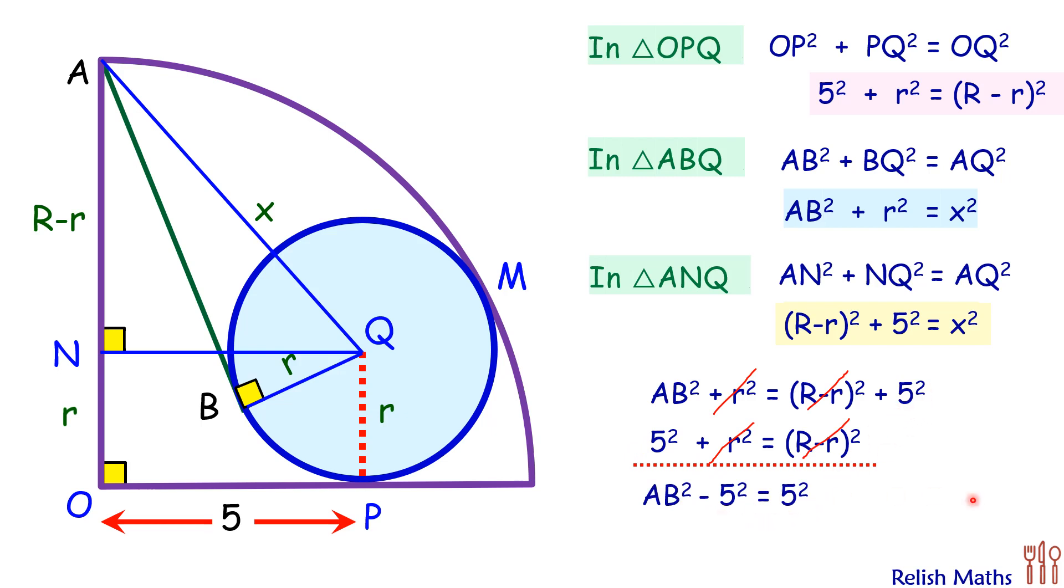Solving it, we will get AB as 5√2 centimeters. I hope you enjoyed the solution.